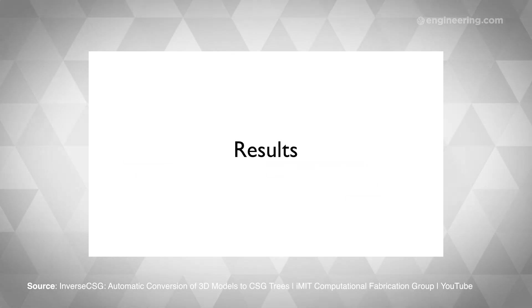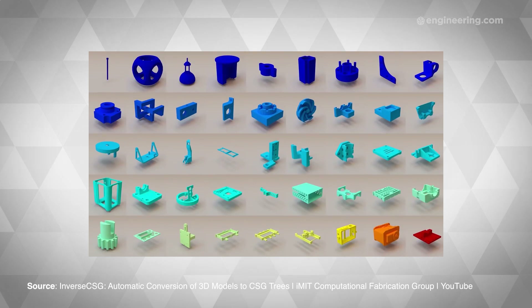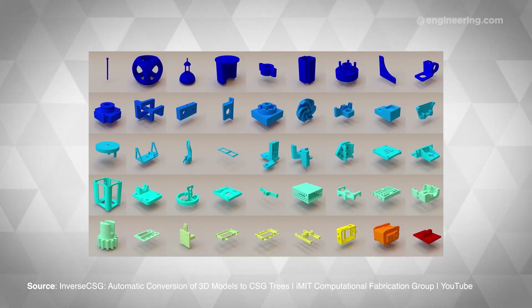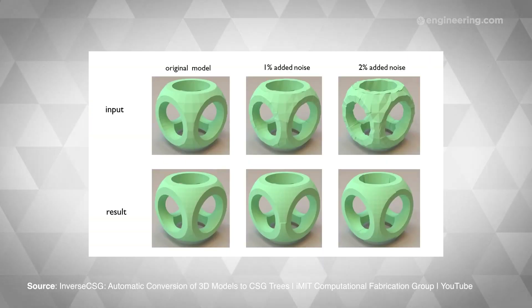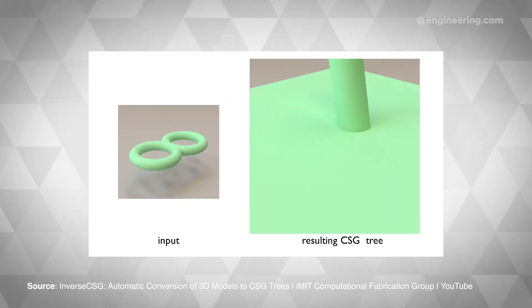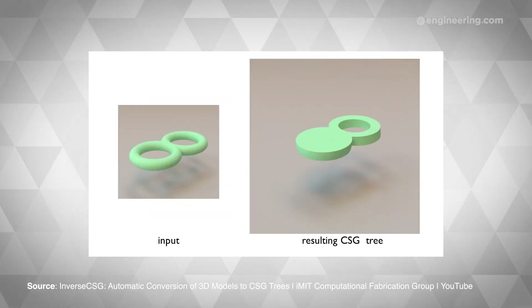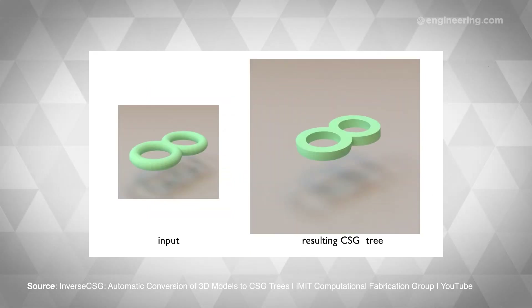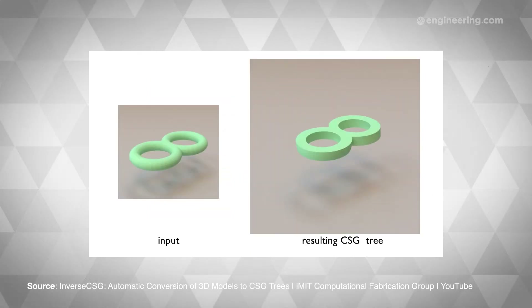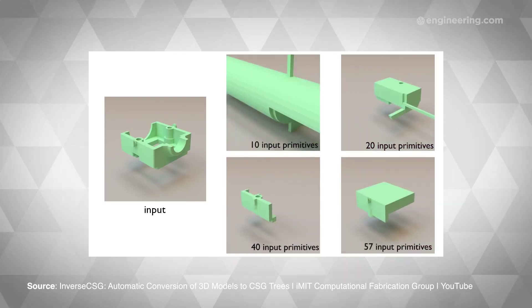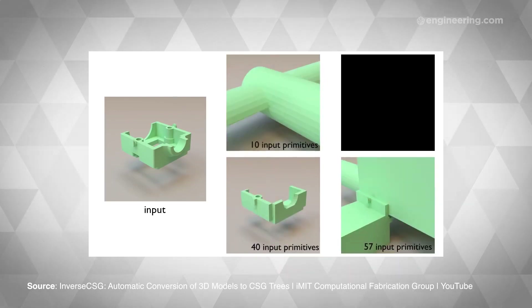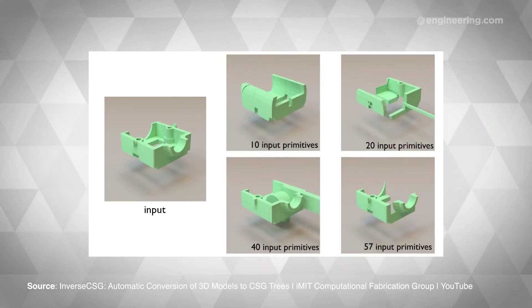So far, they're able to reverse engineer CAD files composed of up to 100 primitives, with simpler models being broken down in roughly a minute. The system can only handle 4 primitive shapes right now, but the researchers are aiming to increase the complexity of its CSG grammar to handle even more. Aside from the obvious impact on design, this could have major implications for mass customization, which many 3D printing optimists see as the next big trend in manufacturing.